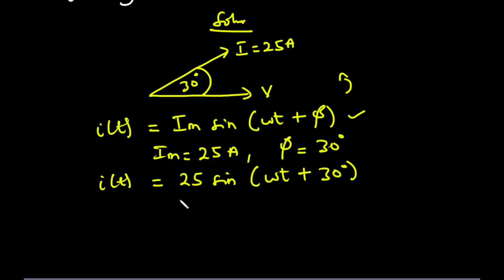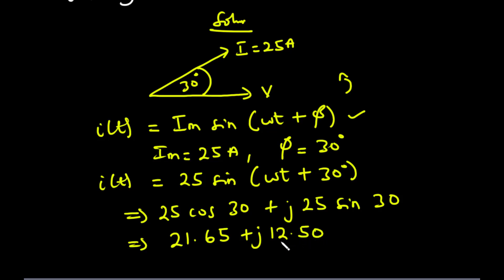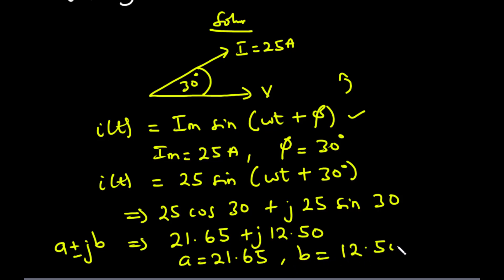To represent I(t) in the form A plus or minus jB, we compute 25 cos(30°) plus j times 25 sin(30°). Now 25 cos(30°) equals 21.65 and 25 sin(30°) equals 12.50. So we have A equals 21.65 and B equals 12.50, giving the current as 21.65 plus j12.50.